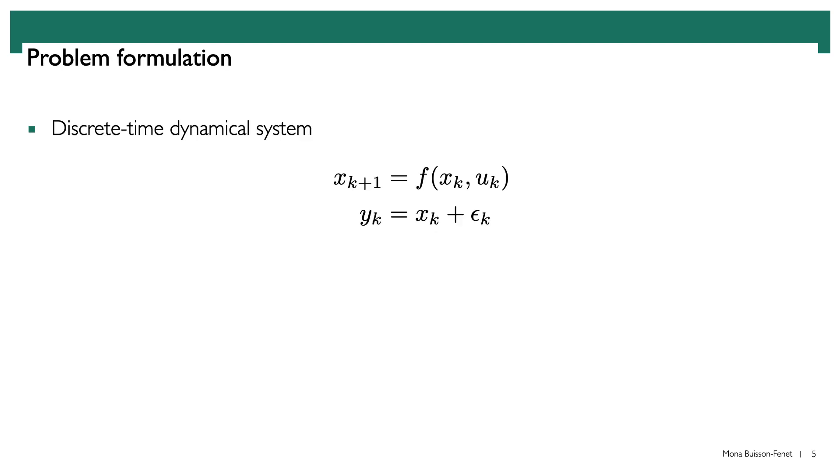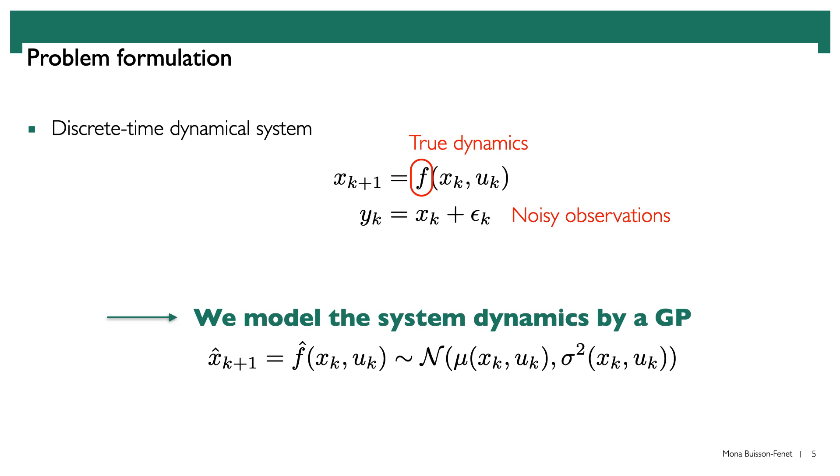So let's formalize this a little bit. We are looking at a discrete-time dynamical system of state X, control input U, and true dynamics F that are unknown. We use some noisy observations of the system in order to build an estimate model of it, which we call F-hat. And here it will be a Gaussian process model.